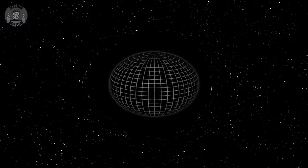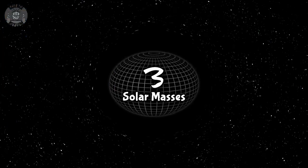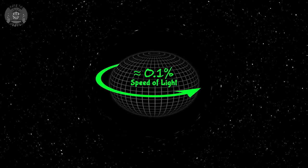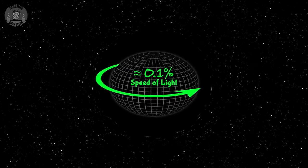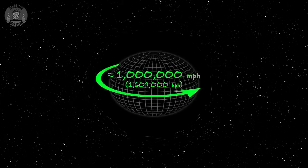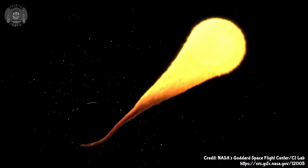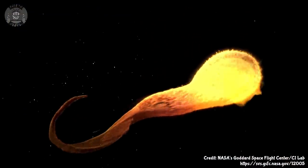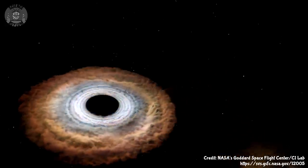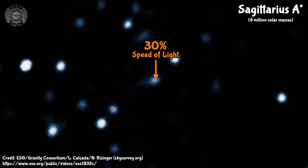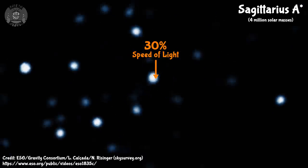How fast are they spinning? Fast, fast! Let's say we're dealing with a small one, like three times the mass of the Sun. Its event horizon will be spinning at about one-tenth of a percent the speed of light. That might not sound like much, but it's around one million miles per hour. And those are the slow ones. If they've been around for a while, they can absorb angular momentum from the stuff they eat and speed themselves up over time. The supermassive one at the center of our galaxy is spinning at over 30% the speed of light.